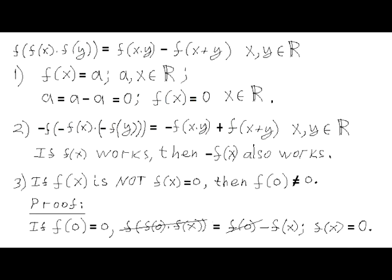This is my second attempt to solve this interesting problem. Let's try a constant function f(x) = a, where x ranges over all real numbers and a is some constant real number. If we plug in the value a for all the functions in the functional equation, we can easily see that a must be 0. This gives us the first, even though trivial, solution: f(x) = 0 for all real numbers x.